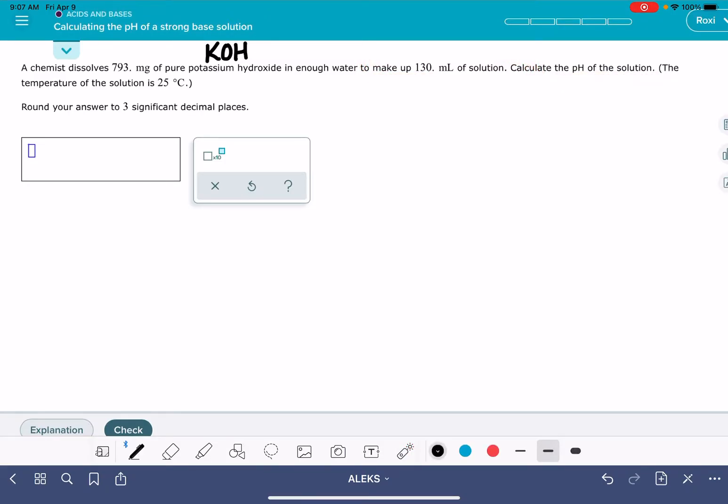The first thing you should do, even though it might feel a little bit unnecessary, is write a balanced chemical equation showing the dissociation of your strong base. KOH dissociates into K+ ions and OH- ions. And it's the OH- ions, the hydroxide ions, that dictate the pH of the solution. So this is actually what I need to figure out in this problem.